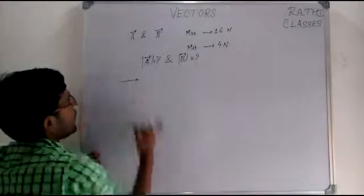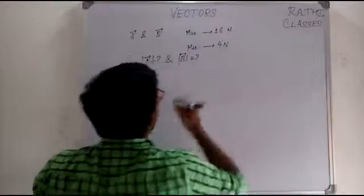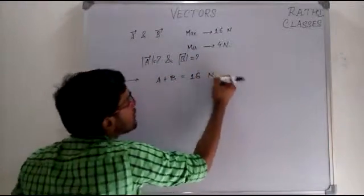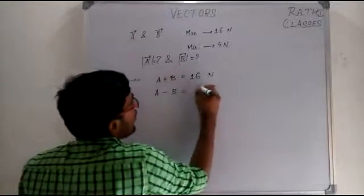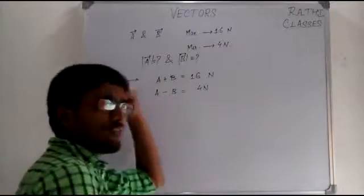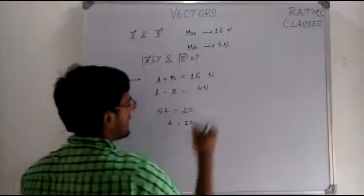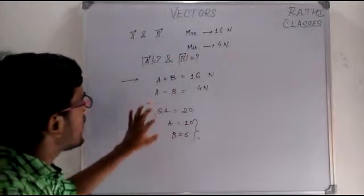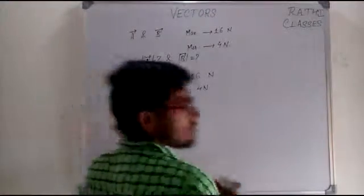The resultant is maximum when theta is 0 degrees, giving A plus B equals 16 newtons. The resultant is minimum when theta is 180 degrees, giving A minus B equals 4 newtons. Adding these two equations: 2A equals 20, so A equals 10 newtons, and substituting back gives B equals 6 newtons. This was a basic elementary problem.